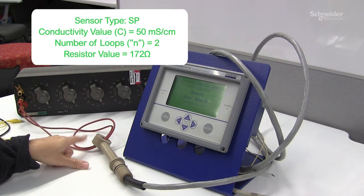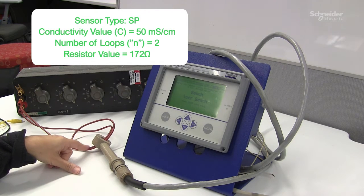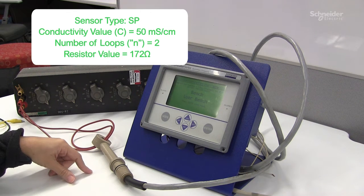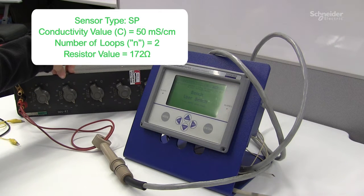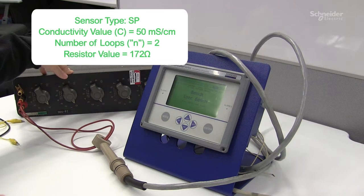Doing this type of connection, in my formula number of loops equals to two. To replicate or simulate 50 millisiemens, I will need to dial 172 ohms. So now I'm above 100 and I can use that value.